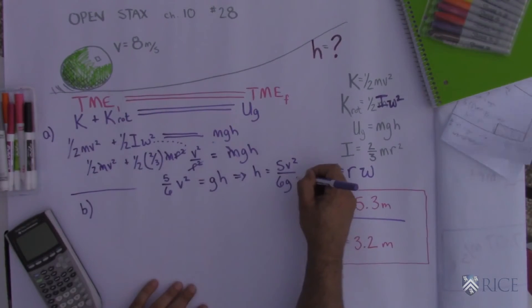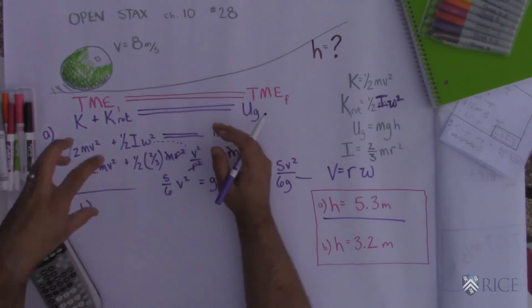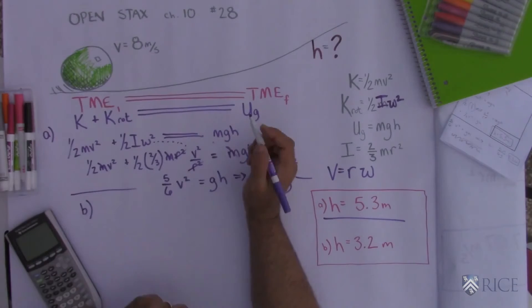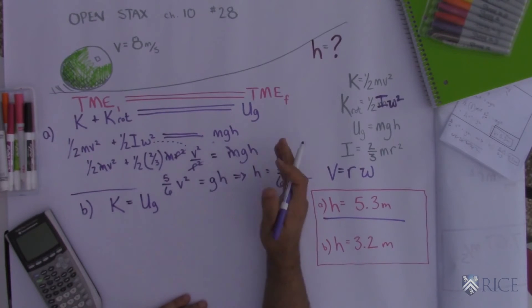Alright, well that's even easier this time because we don't need to worry about rotational kinetic energy. We don't need to worry about moment of inertia. We'd get the same answer if this was a cube and it was just sliding up the hill. When it starts out all its energy is translational kinetic energy. That gets converted into gravitational potential energy.